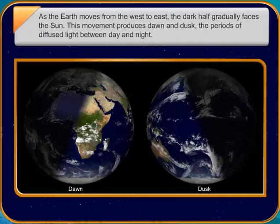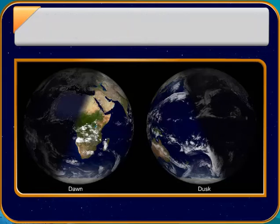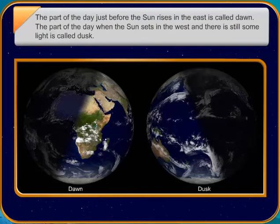The countries in the eastern part of the globe experience sunrise earlier than the countries in the west. Can you name the country known as the Land of the Rising Sun? The Land of the Rising Sun is Japan.